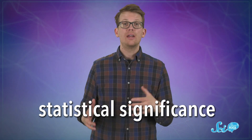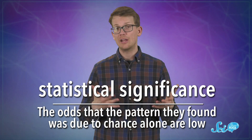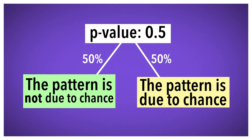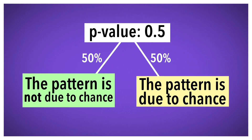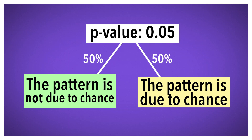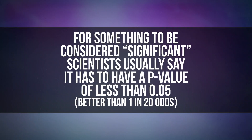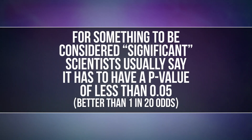When scientists say that, they mean that their data has passed a certain level of scrutiny, and that the odds that the pattern they found was due to chance alone are low. Those odds are usually expressed as a p-value, which is just the odds as a proportion. So a p-value of 0.5 means 50% probability, or 50-50 odds. The lower the p-value, the more likely it is that the result wasn't due to chance. For something to be considered significant, scientists usually say it has to have a p-value of less than 0.05, or better than 1 in 20 odds.